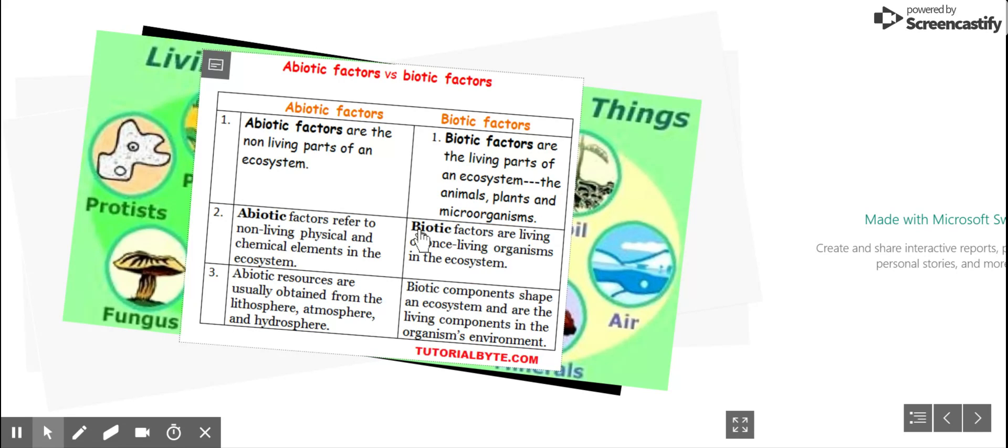On the other hand, biotic factors are the living parts of an ecosystem, the animals, plants, and microorganisms. Biotic factors are living or once-living organisms in the ecosystem. Biotic components shape an ecosystem and are the living components in the organism's environment.